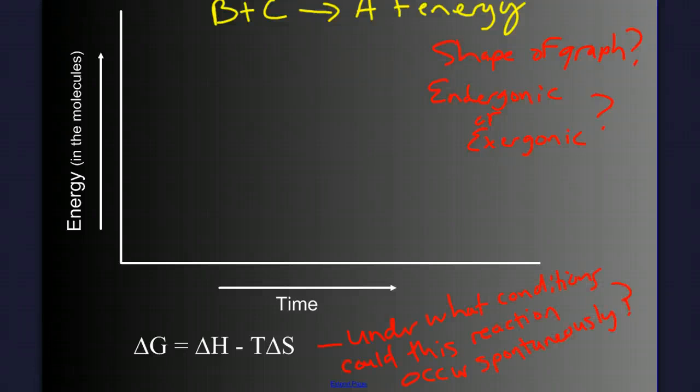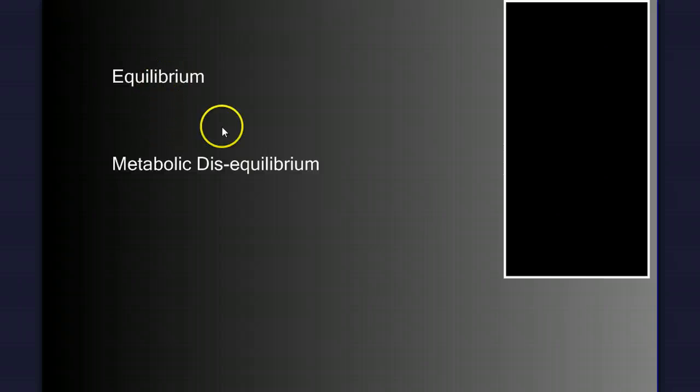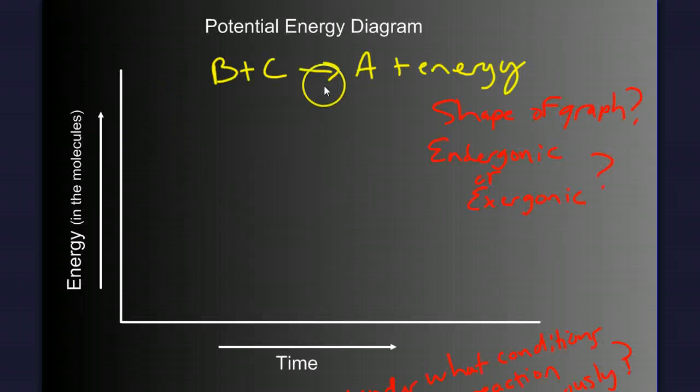In class, we're going to talk about equilibrium and metabolic disequilibrium. What happens when these reactions are reversed? And when do they go in which direction? Because most of these reactions are reversible. And come back for the next video where we're going to discuss enzymes and how they affect the rate of this reaction.